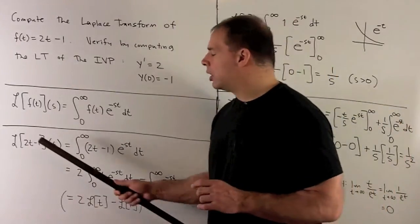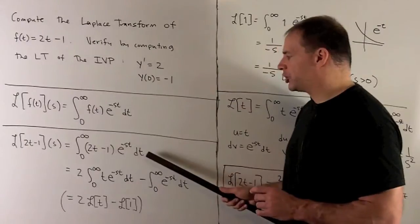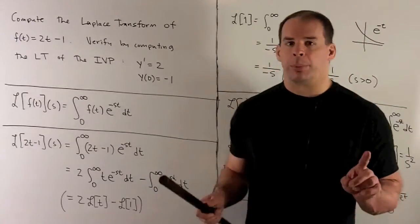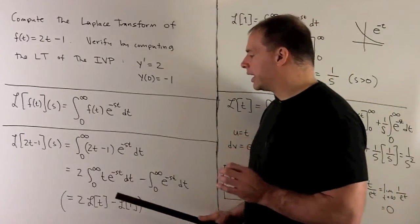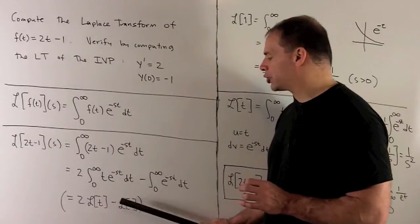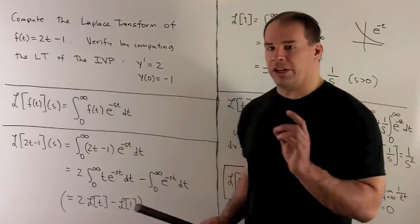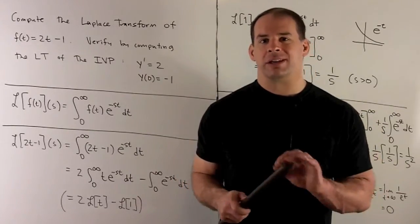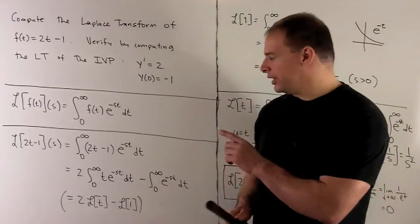In our special case, we take the Laplace transform of 2t minus 1, plug it into the definition, and because we have an integral we can break it apart and pull numbers out. So we're really looking at twice the Laplace transform of t minus the Laplace transform of 1. This just verifies the linearity property of the Laplace transform — you can break up sums and factor out numbers.